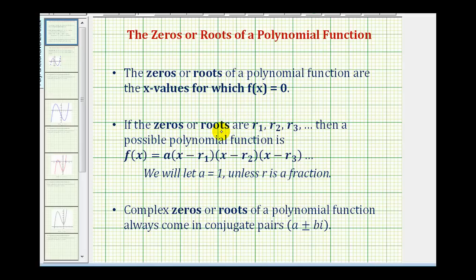If the zeros or roots are r sub 1, r sub 2, and so on, this gives us information about factors of the polynomial function. If r sub 1 is a zero, then x minus r sub 1 would have to be a factor of the function. If r sub 2 is a zero, then x minus r sub 2 would also be a factor of the polynomial function, and so on.